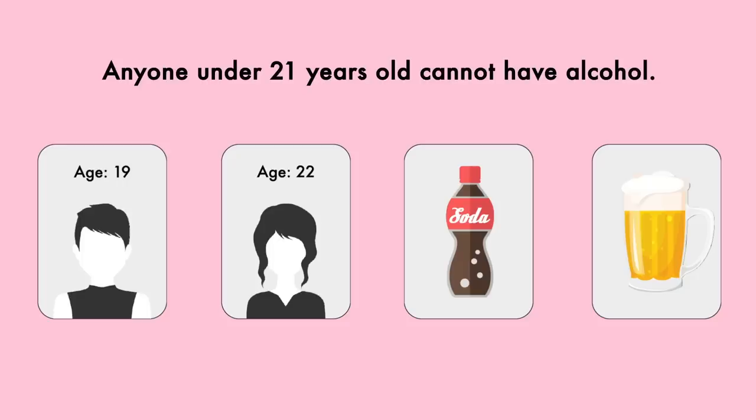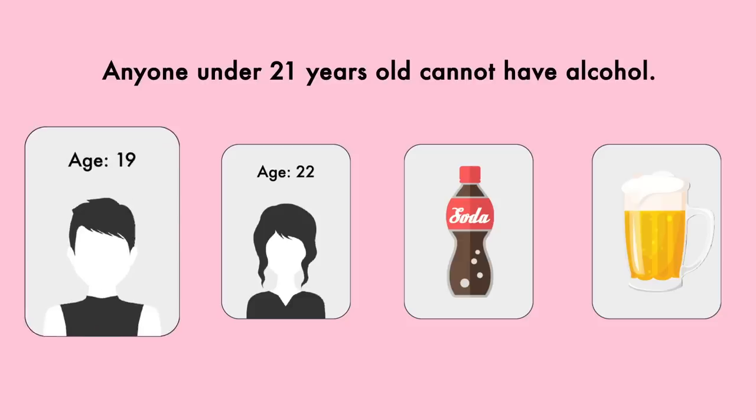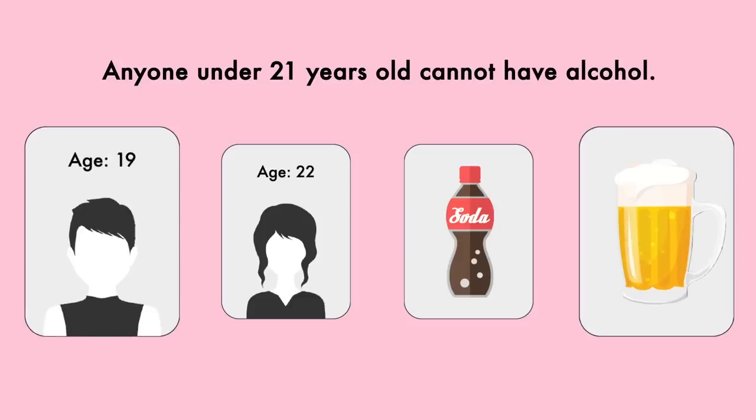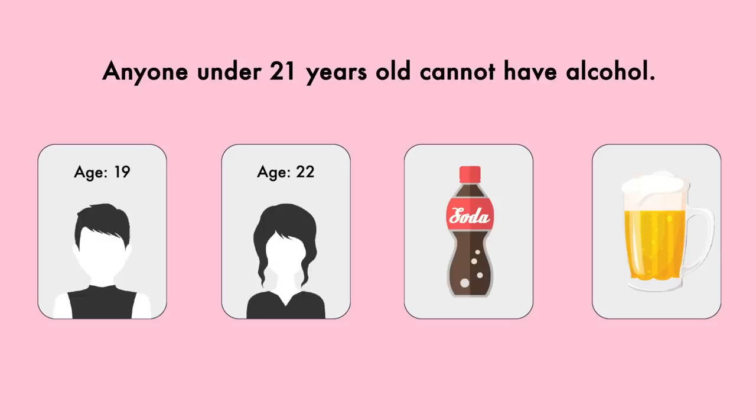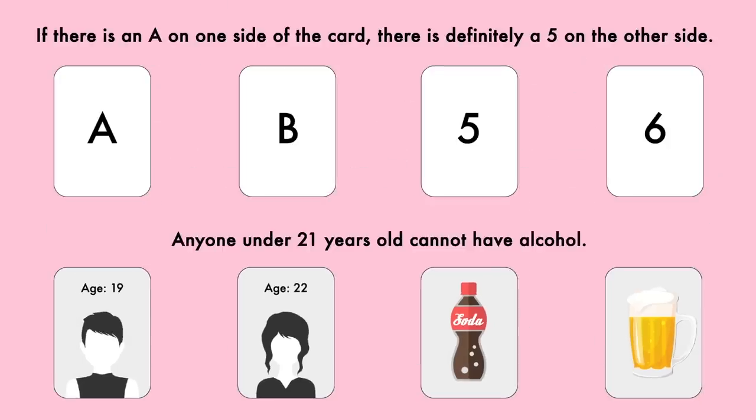The question is which of these customers do you need to investigate further to see if the bar is breaking the law? Most people have no issue with this problem as you need to check the 19-year-old to see what they're drinking, and you need to check the person drinking a beer to see how old they are. But the thing is, this is essentially the same question I asked before with the same answers.